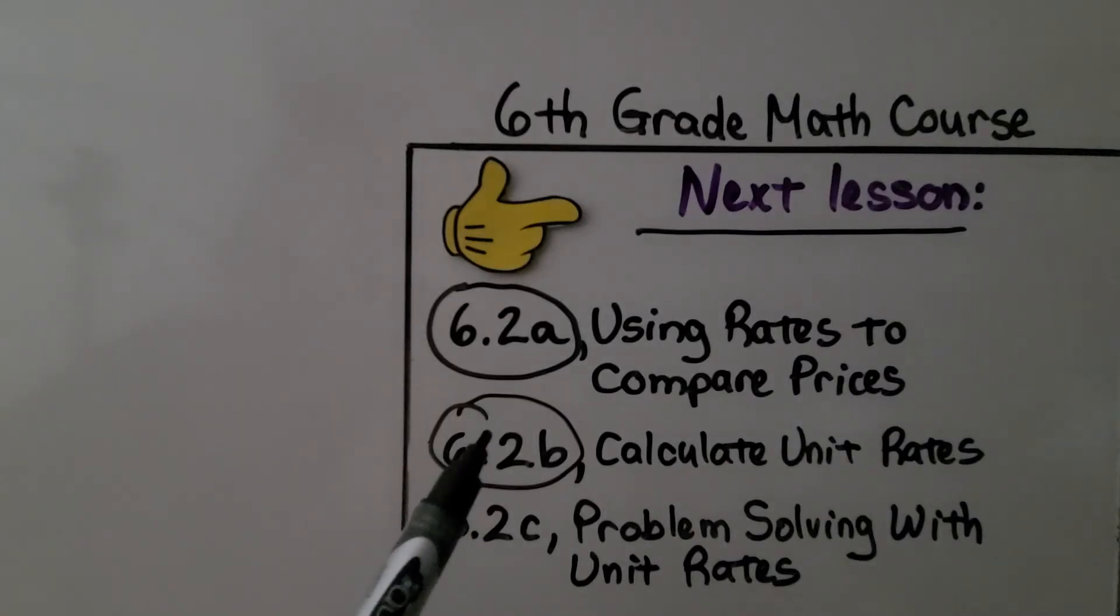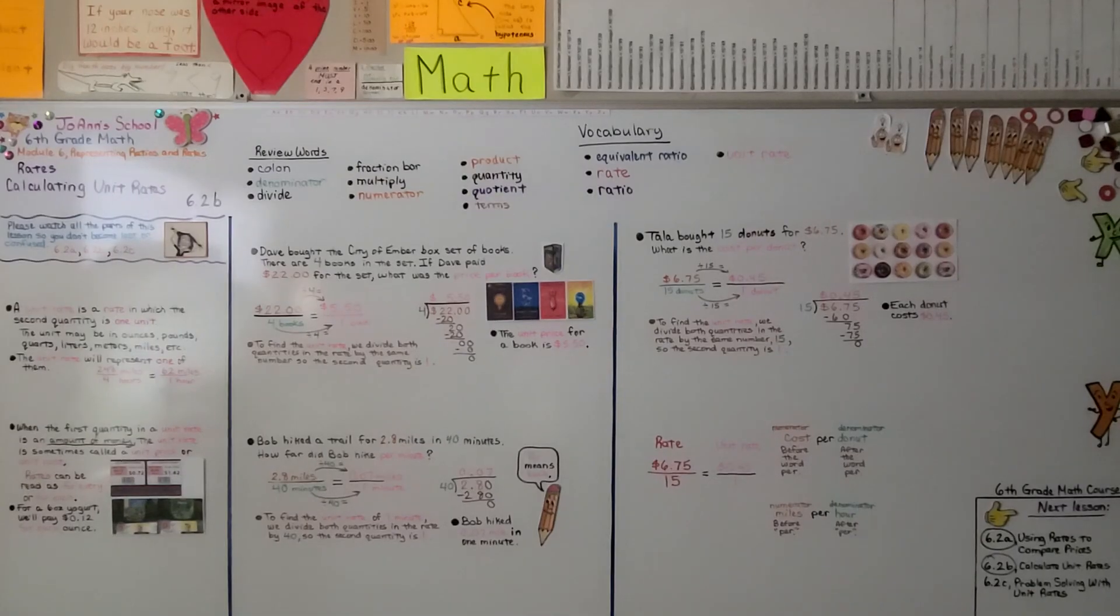So now we've finished the second part of 6.2. We're going to go on to the last part. We're going to do some word problem solving with unit rates. I hope this video helps you understand the examples in the book. And I hope you have a great day. See you next time. Bye.